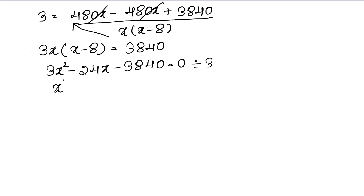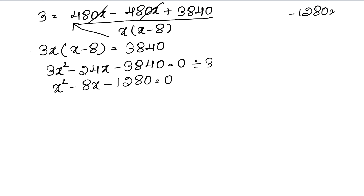So dividing the entire equation by 3, we get x² − 8x − 1280 = 0. Now we need two factors of 1280 whose difference gives 8. Let's find the factors of 1280: 2×640, 2×2×320, 2×2×2×160, 2×2×2×2×80, 2×2×2×2×2×40, 2×2×2×2×2×2×20, 2×2×2×2×2×2×2×10, 2×2×2×2×2×2×2×2×5.